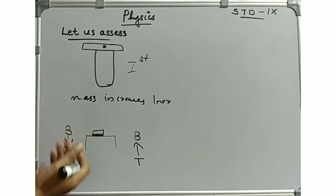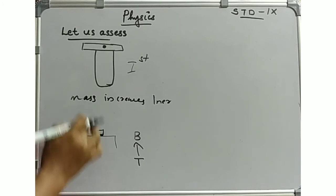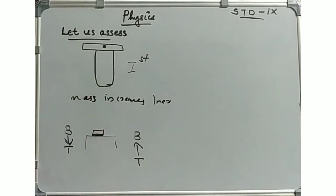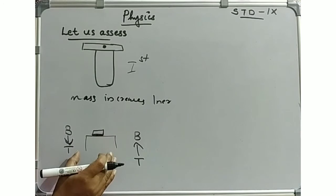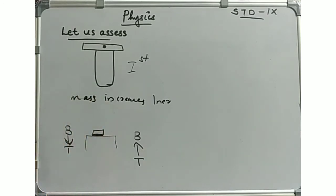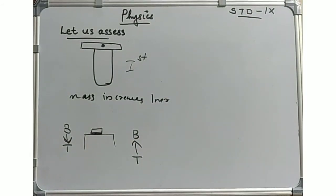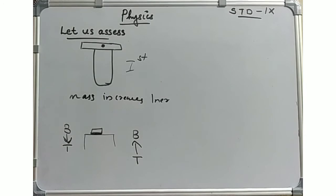If the table and book are in balance, the force from the book acts downward, and the table exerts a force in the upward direction — the opposite direction. These are two balanced forces: the weight of the book acting downward and the normal force from the table acting upward.